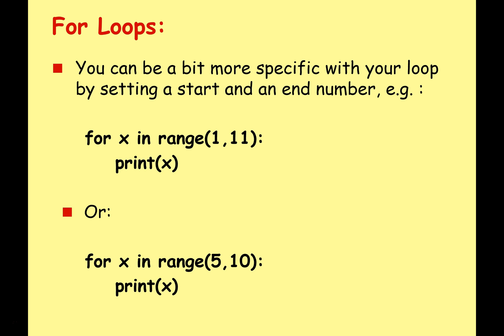You can be a bit more specific with your loop by setting a start and an end number. If we look here at this example, for x in range 1 comma 11 print x, this is going to print 1 to 10 rather than the previous example which was 0 to 9. So I've got a start number and then I got my finish number, and remember this will be one higher than the actual number that will be displayed.